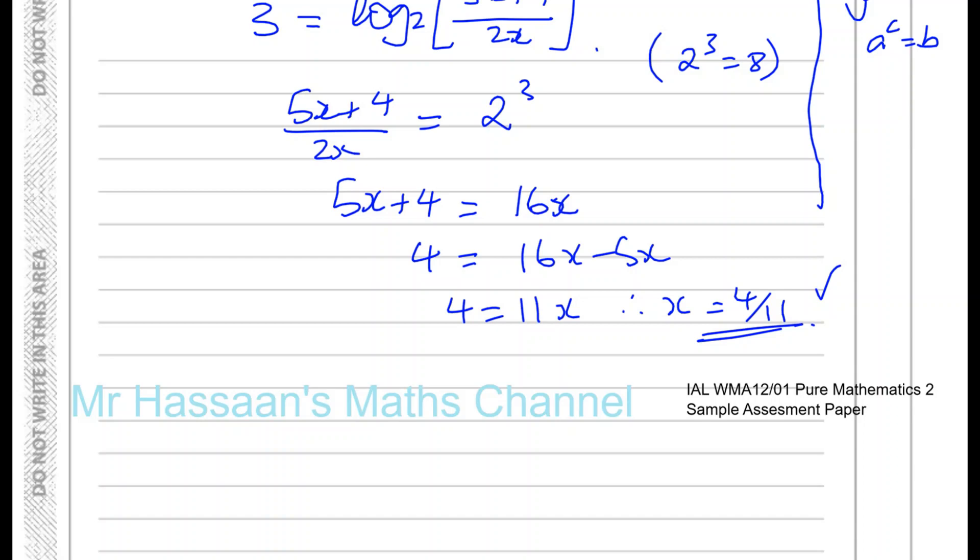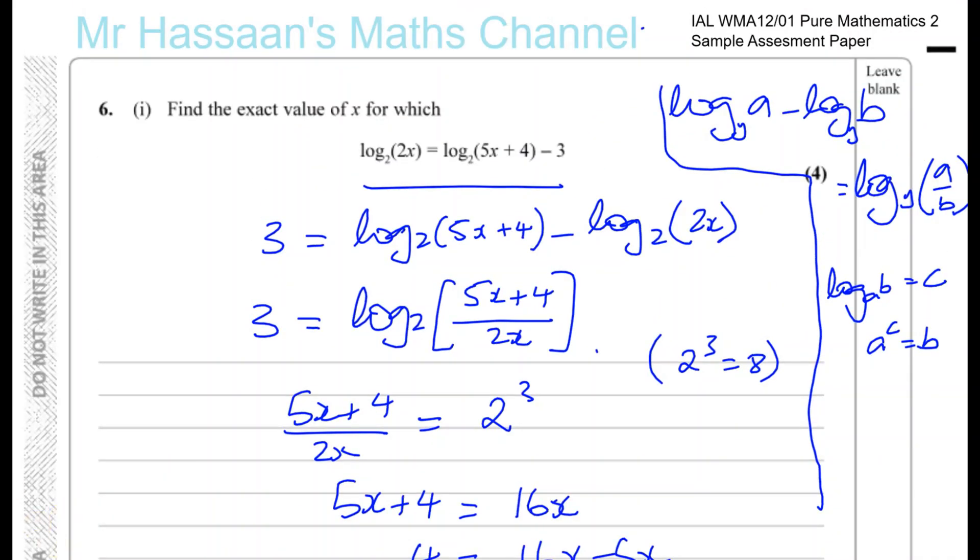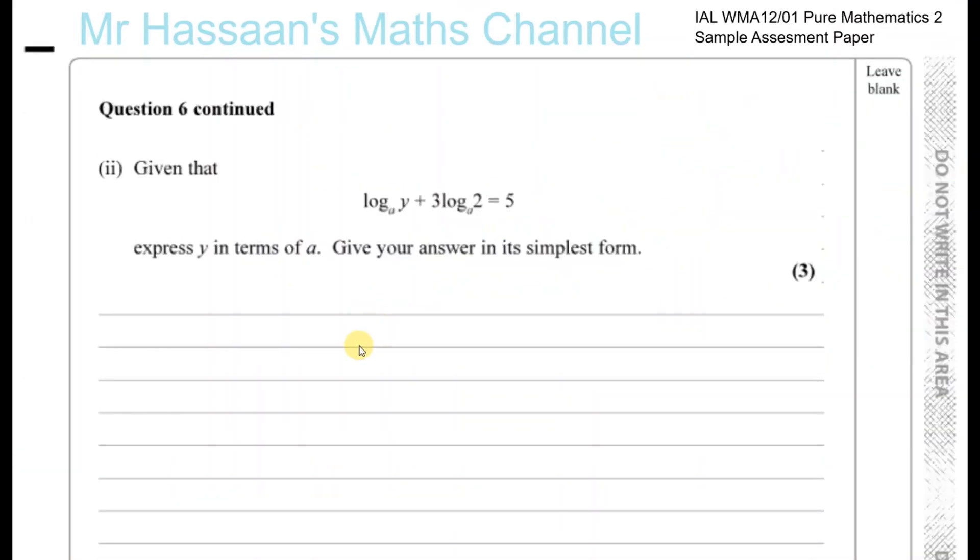So that is the answer to part 1. And now we're going to go on to part 2. So it says, given that log to the base A of y plus 3 log to the base A of 2 equals 5, express y in terms of A, giving your answer in its simplest form.